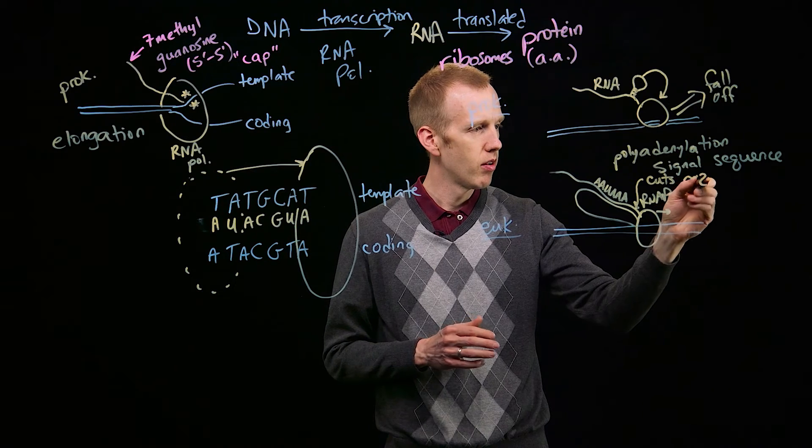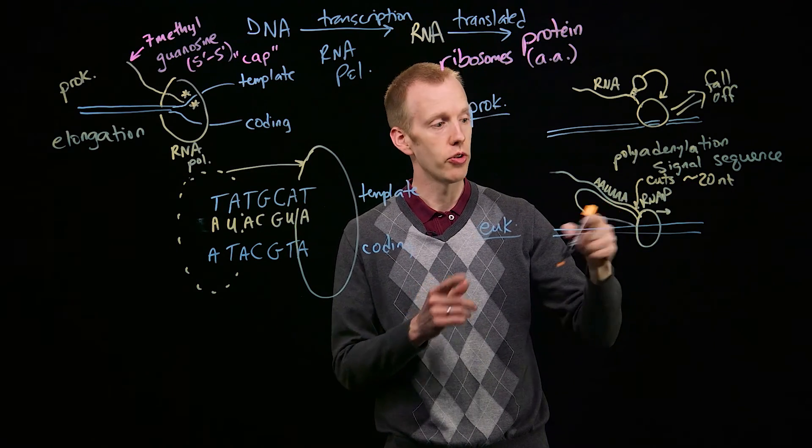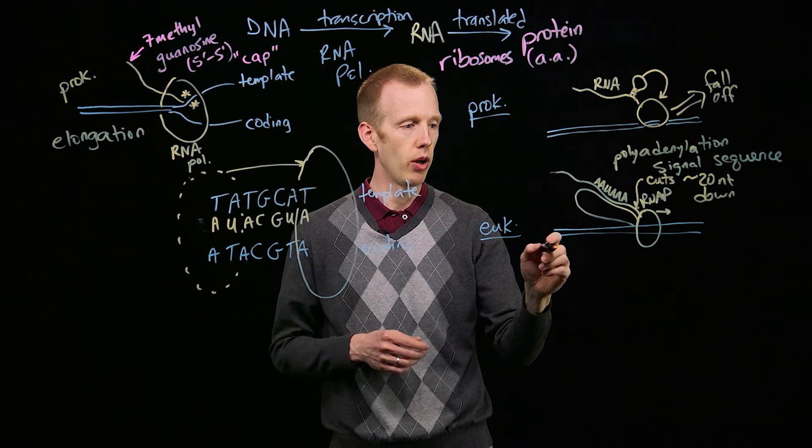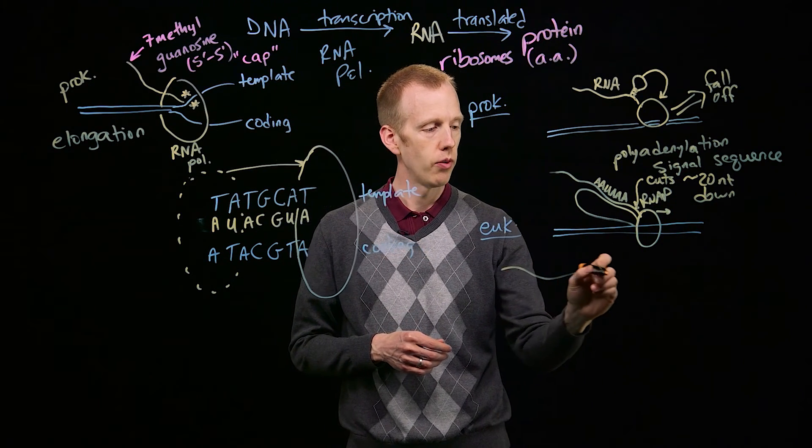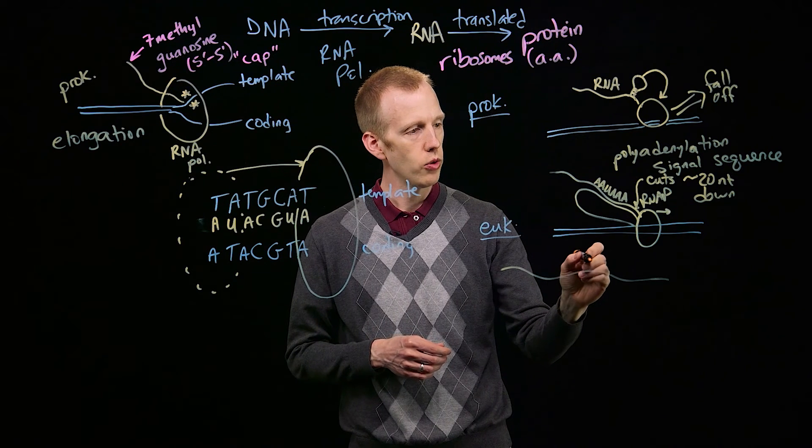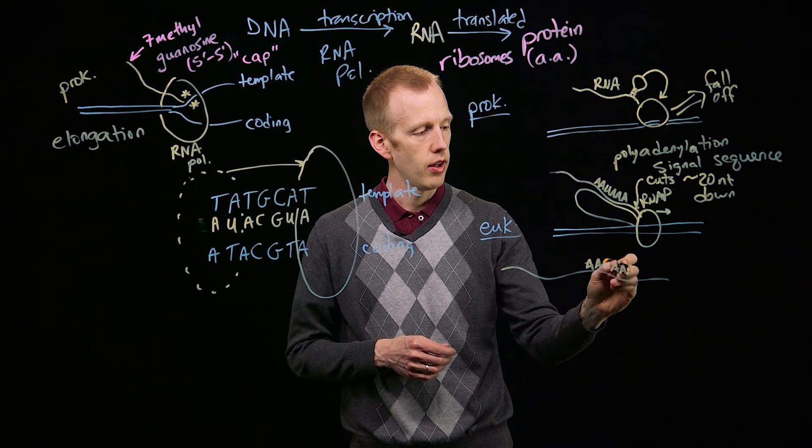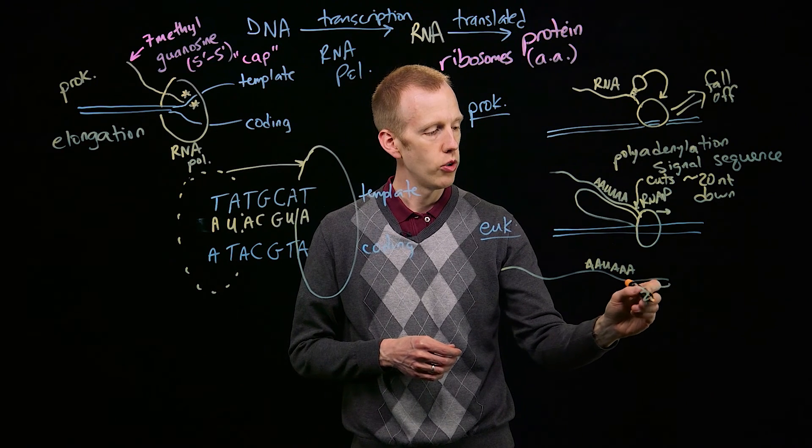That happens about 20 base pairs, 20 nucleotides downstream towards the 3' end, and releases this RNA molecule. Now you have an RNA molecule that's floating around in the nucleus that has that signal sequence and then about 20 more nucleotides.